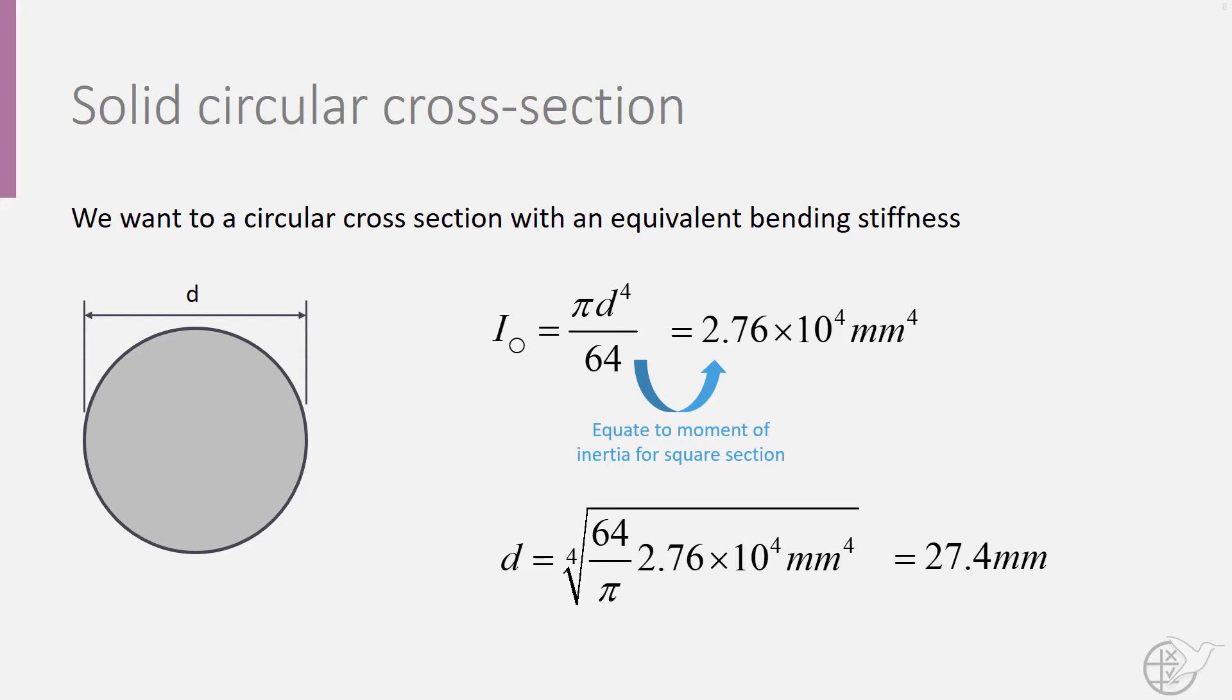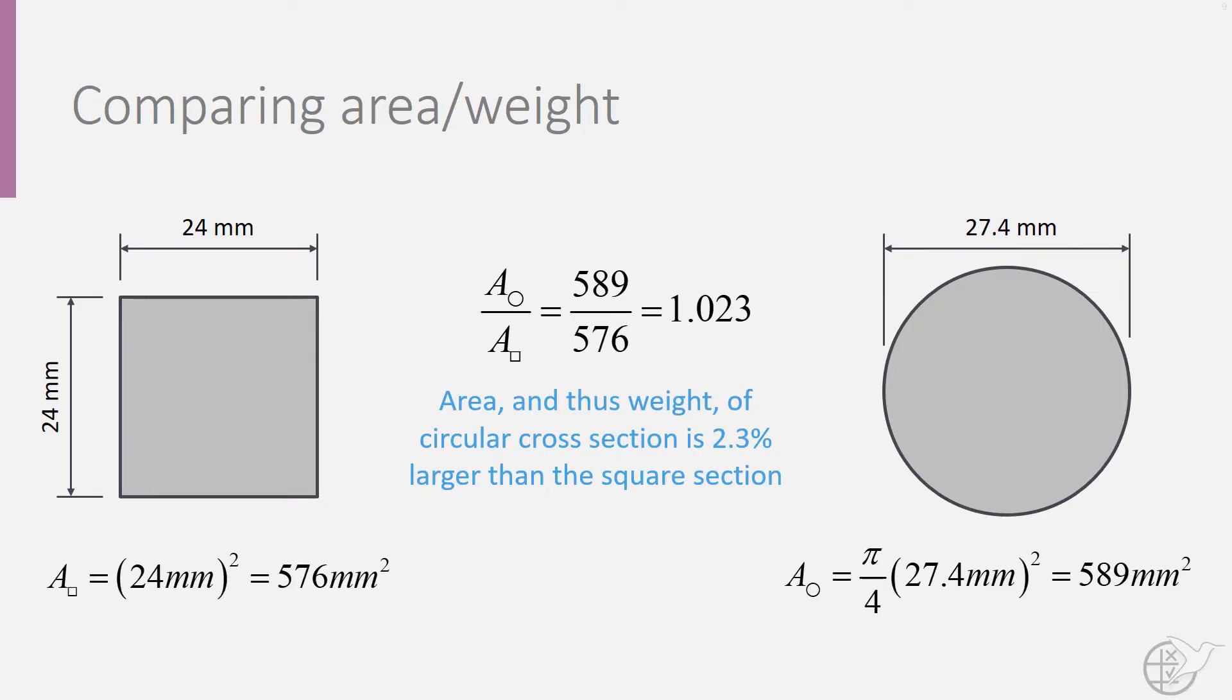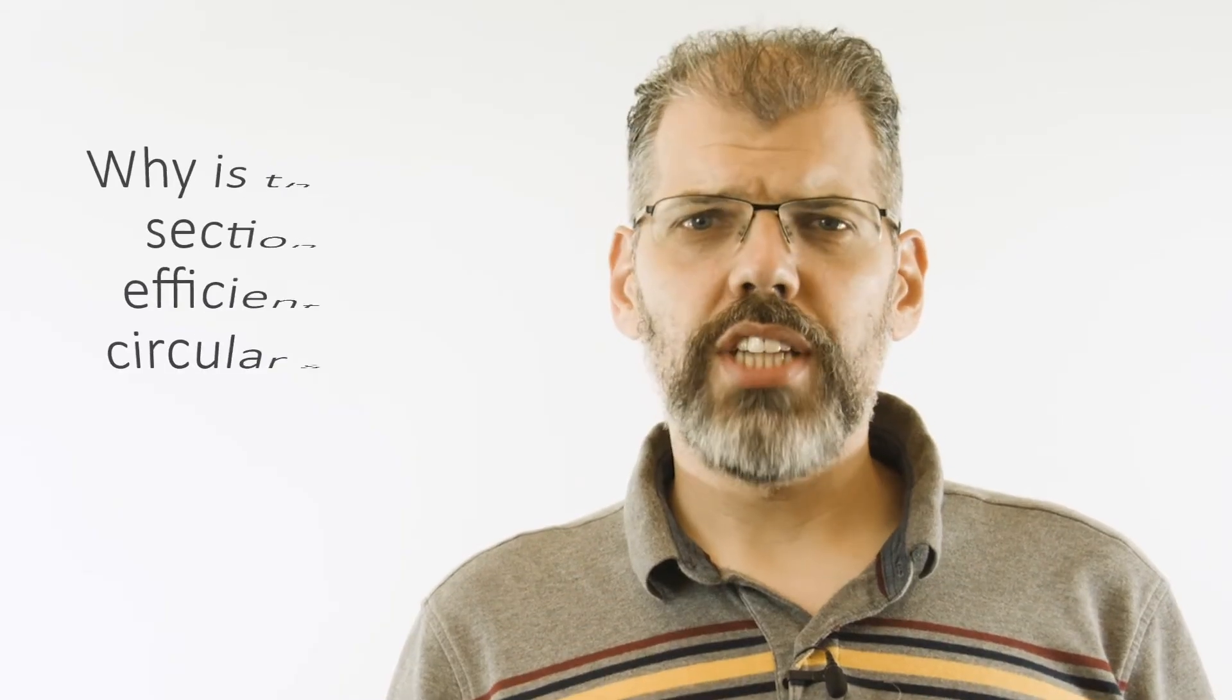If we calculate the area of this new cross-section, we can see that it is 2.3% larger than that of the square section, and thus would be 2.3% heavier if both sections were made of the same material.